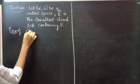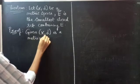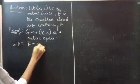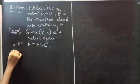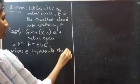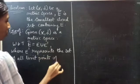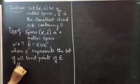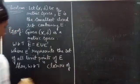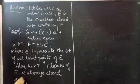Proof. Given (X,t) is a metric space. We know that E-bar equals E union E-prime, where E-prime represents the set of all limit points of E. Also, we know that the closure of E is always a closed subset of X.